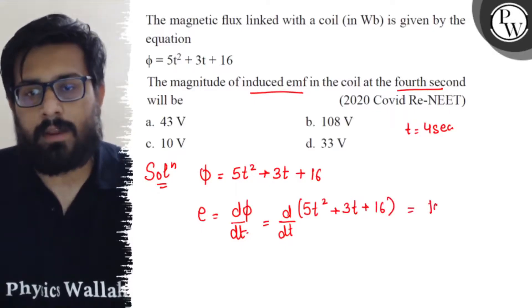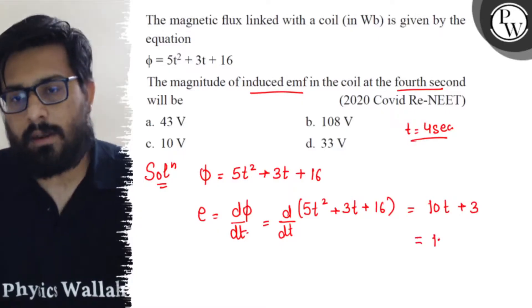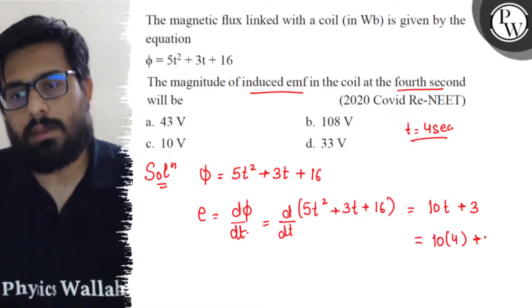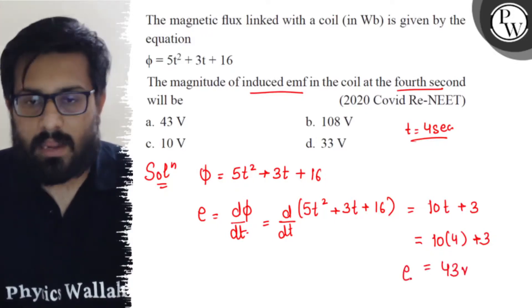Solving it, we get a value of 10t + 3. At t equals to four seconds, we find 10 into 4 plus 3, which comes out to be 43 volt.